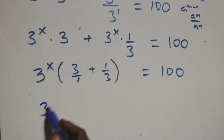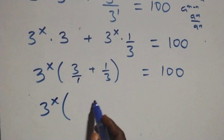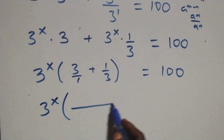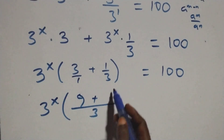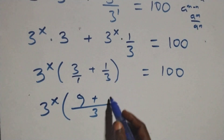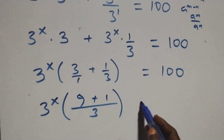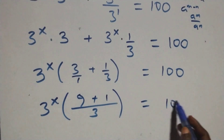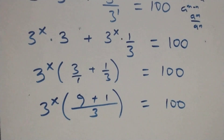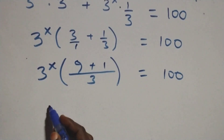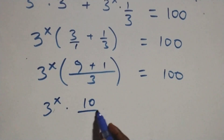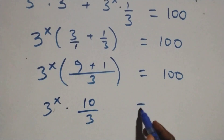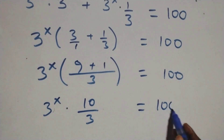Equals to 100. Then we bring this together as one fraction. This is 3 over 1, that is here we have 3 raised to power x times 3 plus 9 plus 3, that is 10, then equals to 100. That is here we have 3 raised to power x times 9 plus 1, that's 10, over 3, then equals to 100.